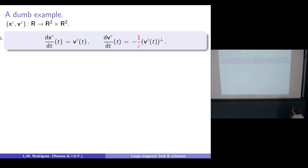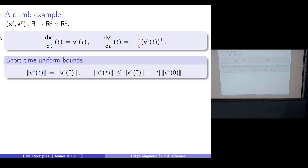Let me start with something very simple to explain the mechanism. These are the Newton equations in 2D where the only force is a Lorentz force with a constant magnetic field, and we are only focusing on the transverse direction — we forget about what happens along the magnetic field. I want to explain the kind of approach that is robust enough to deal with general settings.